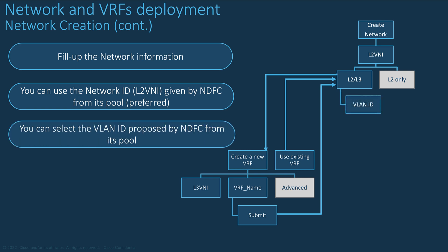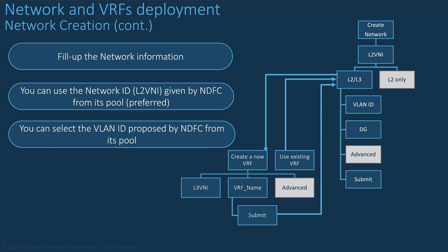For the VLAN ID, either you enter your VLAN ID of choice, or you leave it blank and NDFC will fill the identifier from its pool of VLAN IDs. Enter the default gateway for the VLAN — that is your Layer 3 Anycast gateway that will be deployed to all leaf nodes of interest. Optionally, you can open the Advanced tab. Your network and VRF have been created. Note that some parameters of the network can be modified afterwards if needed.